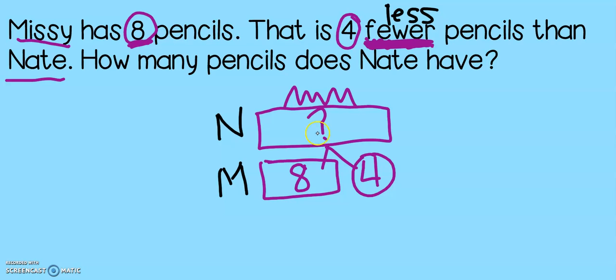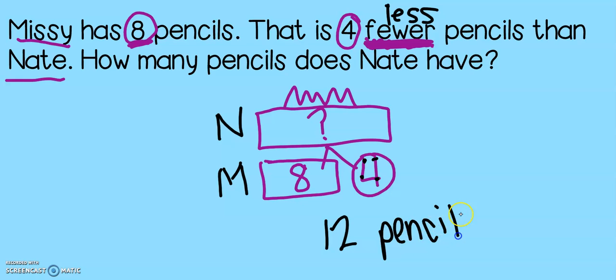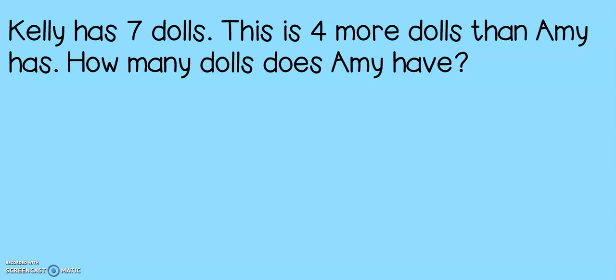Since this is our math mountain, I'm looking to find my total. Finding my total means I'm going to add eight plus four: nine, ten, eleven, twelve. Nate has 12 pencils, and that makes sense since we decided that Nate has more than Missy. Let's move to the next problem.